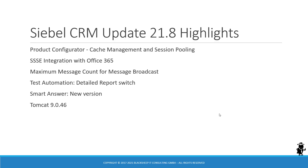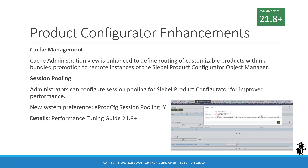Hello and welcome to the 21.8 edition of the Siebel CRM Update Summary. Siebel CRM 21.8 has been delivered earlier this month and here are the highlights. We have updates for the product configurator in terms of improved cache management and session pooling. There is an update for SSSE users with a new possibility to integrate with Office 365 in the cloud. There is a new enhancement for message broadcast, an update on test automation, a new version of SmartAnswer, and the installer lays down a new Tomcat version 9046. Let's take a look at each enhancement in detail.